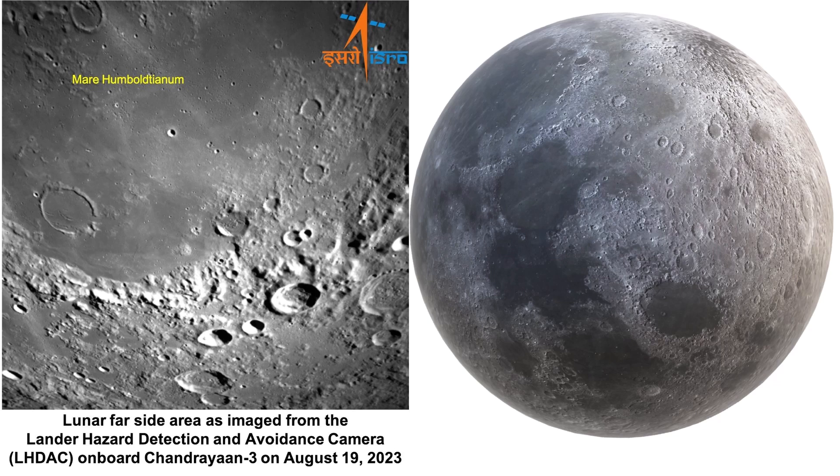Johan Mädler named it after Alexander von Humboldt, a prominent explorer of unknown lands. It's one of the two lunar maria named after people, the other being Mare Smythii. The circle on the moon shown here is where Mare Humboldtianum is located.